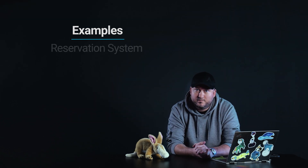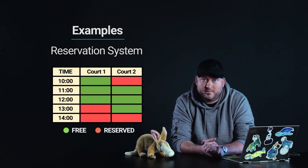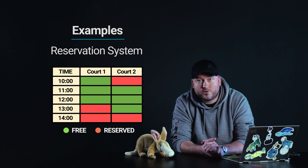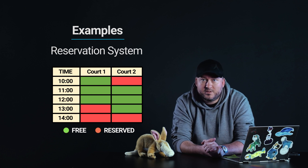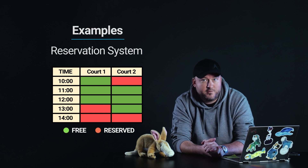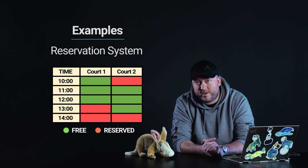Example 2: A reservation system. An online reservation system has a table showing availability of sports courts for different times. Table cells differ only by color. Below is a legend connecting labels to colors — green for free and red for reserved. This presents the same accessibility concern as the previous example because the information depends solely on color.